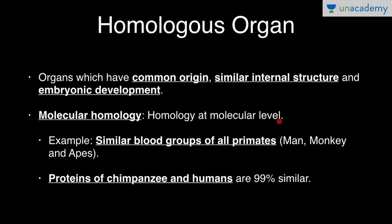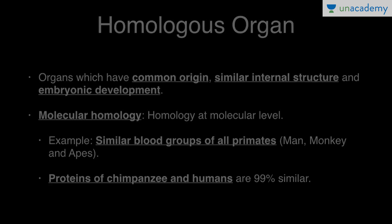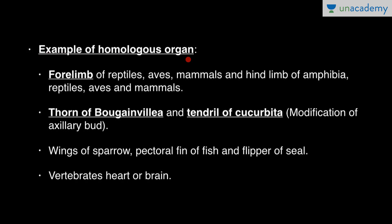For example, similar blood groups of all primates — man, monkey, and apes — such as A, B, O, and AB. Proteins of chimpanzee and humans are 99 percent similar, so chimpanzee and humans show molecular homology.